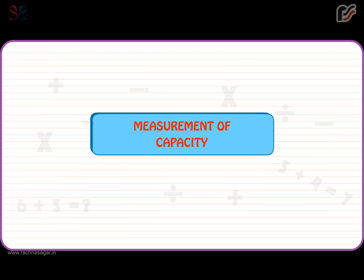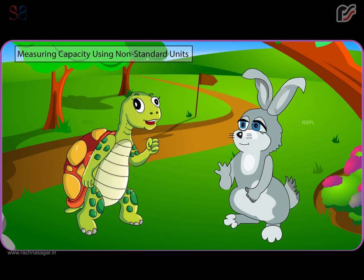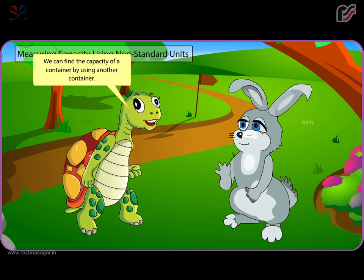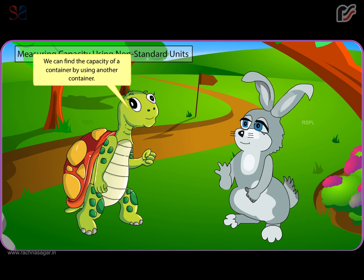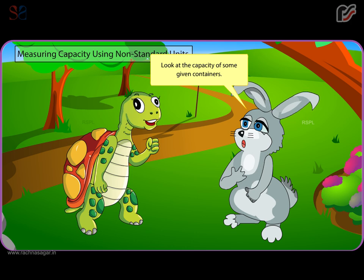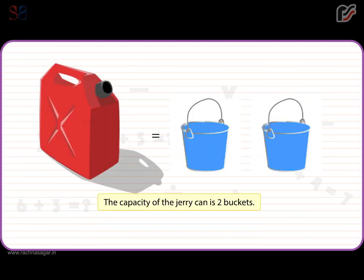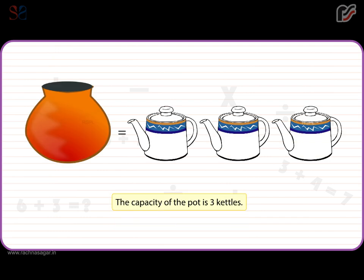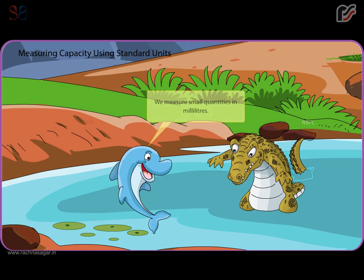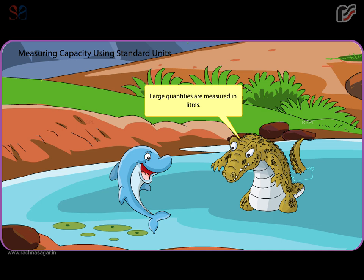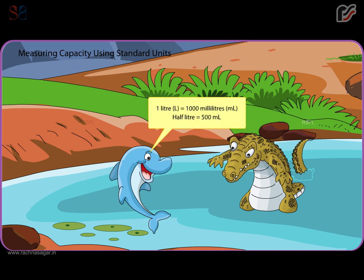Measurement of capacity. Measuring capacity using non-standard units, and measuring capacity using standard units. We measure small quantities in millilitres. Large quantities are measured in litres. One litre is equal to 1000 millilitres. Half litre is equal to 500 ml.